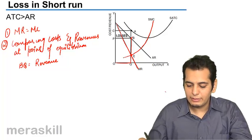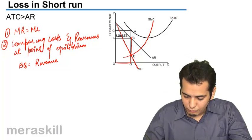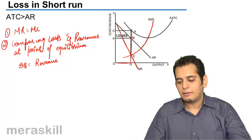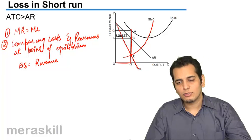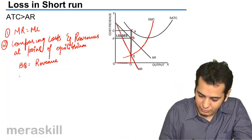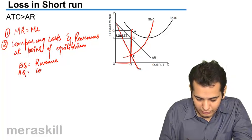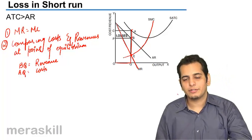Similarly, I will find the cost from point E. I will go up and meet the average total cost curve at point A. So AQ is the average cost.